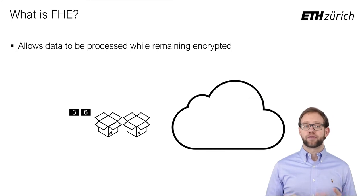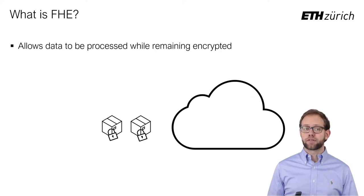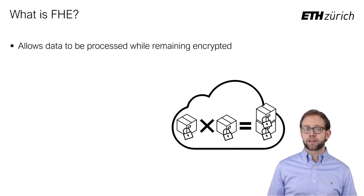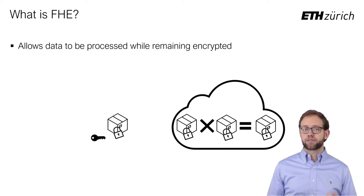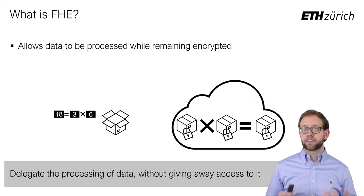Fully homomorphic encryption, or FHE, allows a third party to perform arbitrary computations on encrypted data. That means the user can encrypt some values and send them to the cloud, which can then perform computations over the ciphertext without learning the inputs or the computation results. The client can still decrypt the resulting ciphertext to retrieve the computation result. Effectively, using FHE, we can delegate data processing without having to give away data access.